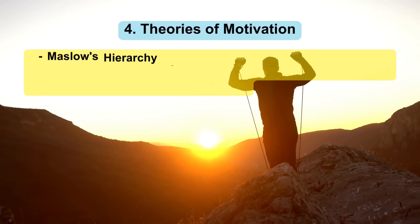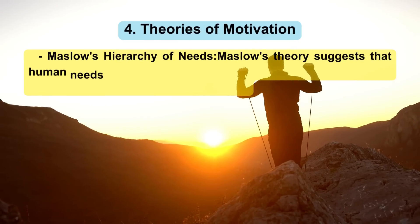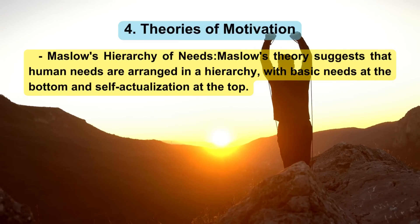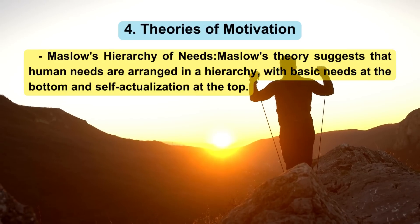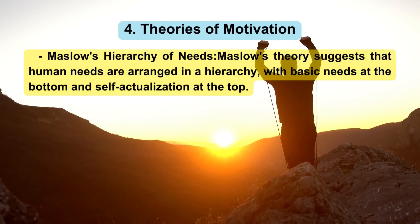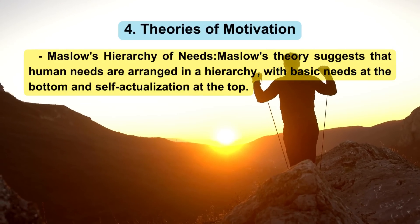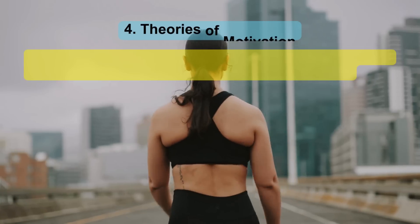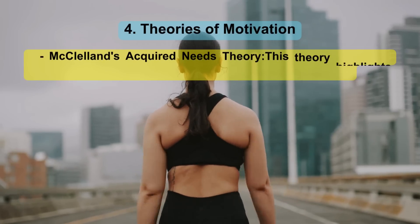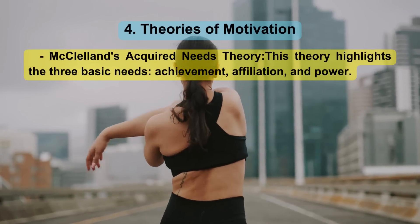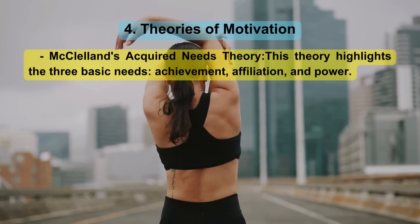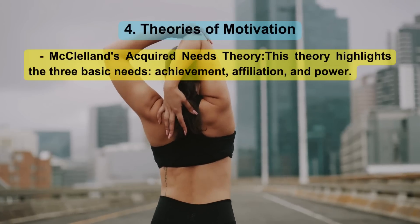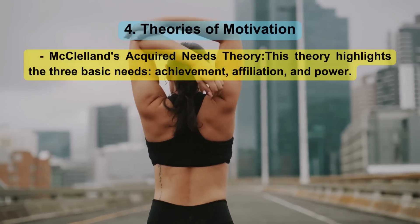Maslow's Hierarchy of Needs: Maslow's theory suggests that human needs are arranged in a hierarchy, with basic needs at the bottom and self-actualization at the top. McClelland's Acquired Needs Theory: this theory highlights three basic needs — achievement, affiliation, and power.